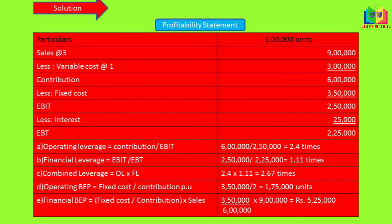Next we have to find the financial breakeven point. The formula is fixed cost divided by contribution into sales, which is nothing but fixed cost divided by PV ratio. Here, fixed cost is 3 lakh 50,000, divided by contribution of 6 lakh over sales of 9 lakh. Applying this in the formula, we get rupees 5 lakh 25,000 as the financial breakeven point.